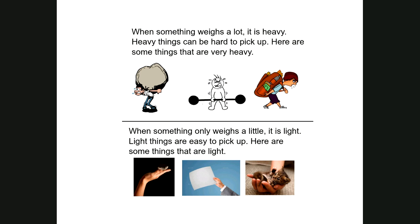Here are some pictures of things that are heavy and things that are light. When something weighs a lot, it's heavy, and heavy things can be really hard to pick up. Some examples of heavy things: he's trying to carry a really heavy rock, this person's picking up a really heavy weight, that boy has a really heavy backpack. If you think of things that are really hard to pick up and your arms feel like they're going to drop down, that means it's really heavy.